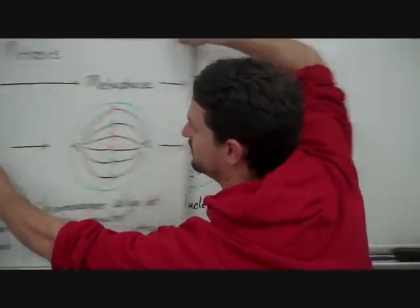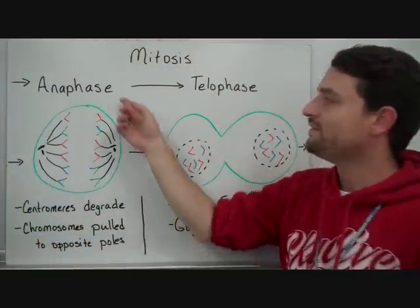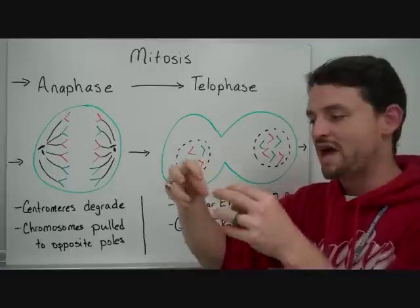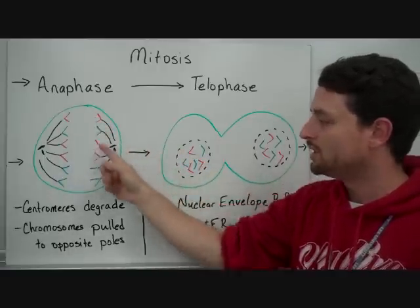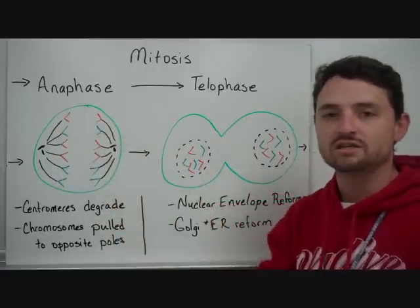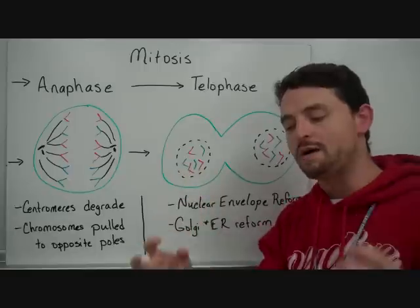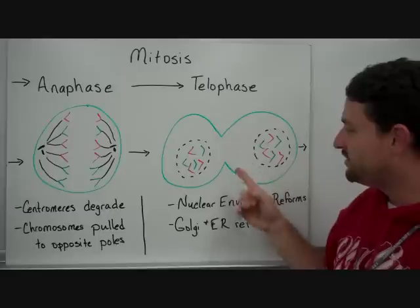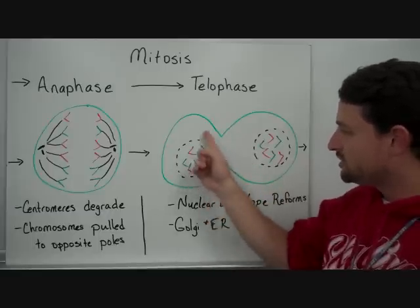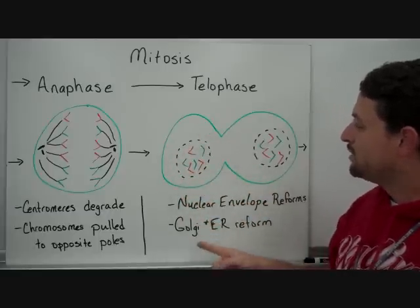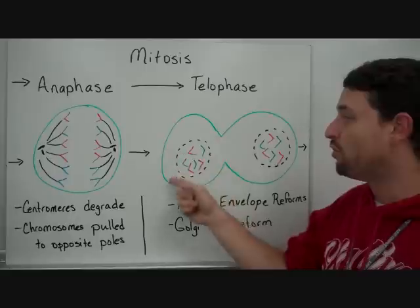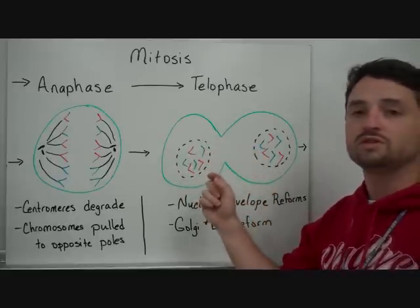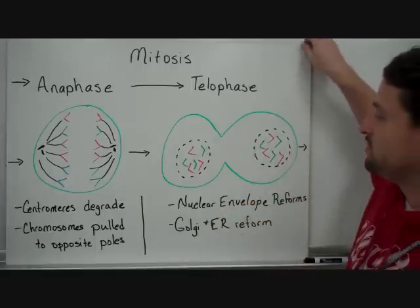After metaphase, we have anaphase. In anaphase, the centromeres degrade, which allows those chromosomes to be pulled apart. The chromosomes, connected to those spindle fibers, will be pulled to opposite poles of the cell. Then we go into telophase — in telophase, the nuclear envelopes start to reform, the Golgi and ER will reform on each side of the cell, and you can still see those chromosomes as the new cells start to form.